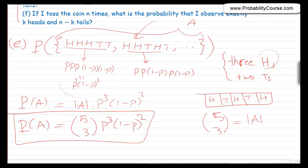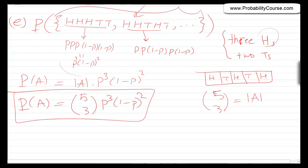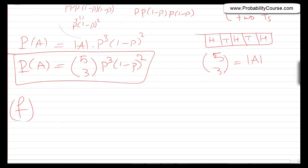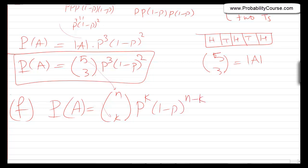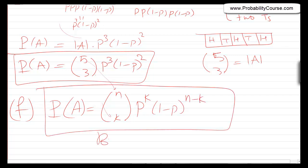For part f, the general scenario: I toss a coin n times. What is the probability of observing exactly k heads and n minus k tails? Generalizing the above argument, the probability is n choose k times p to the k times (1 minus p) to the n minus k. This is the famous binomial formula.